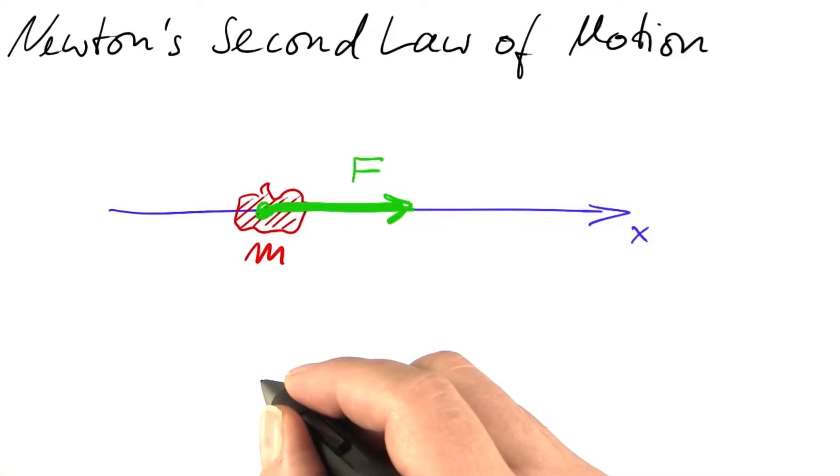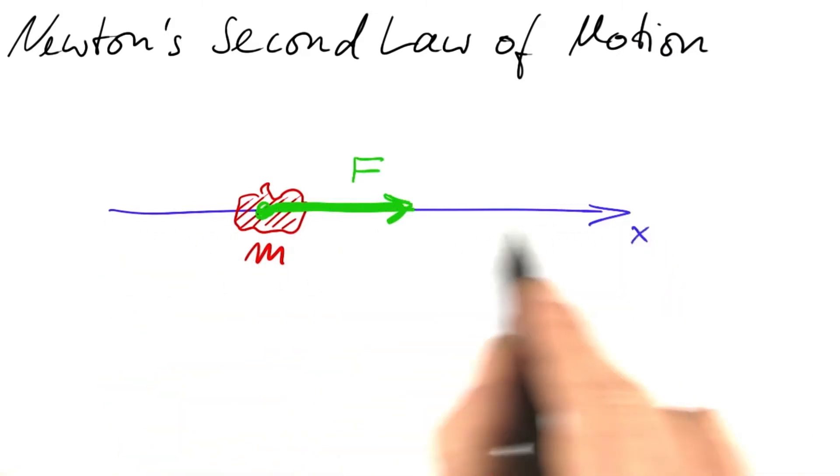Now let's apply derivatives to physics. Newton's second law of motion. We're looking at one-dimensional motion. Think of the train we saw before.